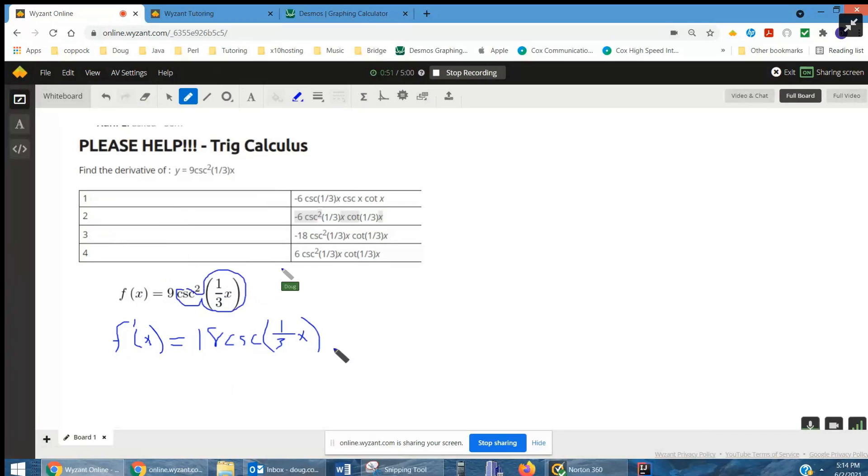And the derivative of cosecant is negative cosecant, still of one-third x, cotangent of one-third x.